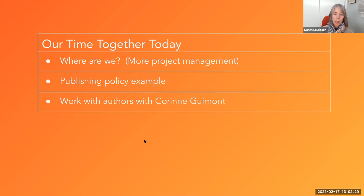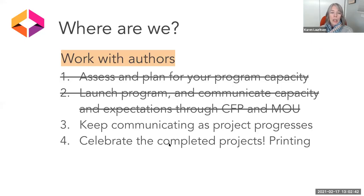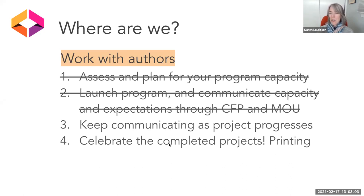I like these two examples because they show two different systems — one is an institution, one is a consortium — communicating to authors: here's what our publishing program looks like, here's what we want from you, here's what we can provide. And then I'll turn things over to Corinne Guimont, who will talk about her many experiences publishing open textbooks. Today's session is really about what do you do while the authors are writing — what can you do to keep the project moving and complete it? And then next week when Kevin joins us, we'll talk about printing and celebrating completed projects.